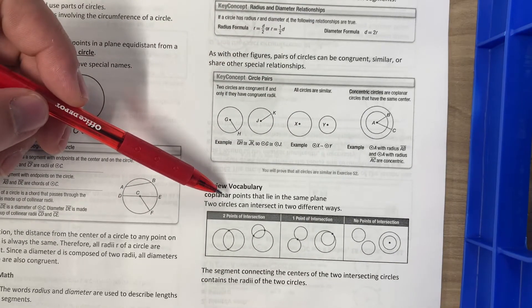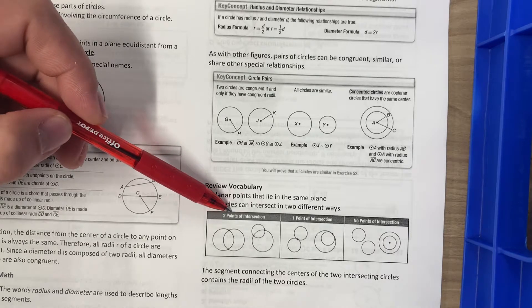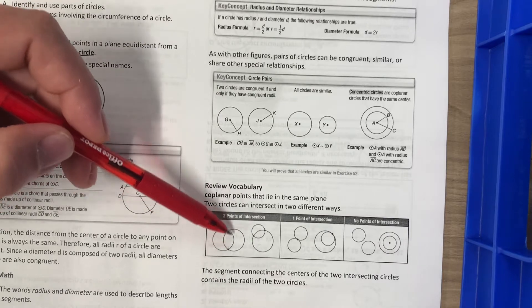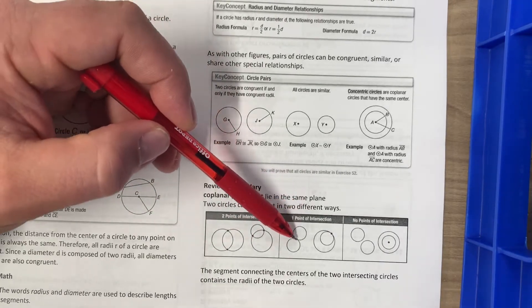Coplanar points that lie in the same plane, two circles can intersect in two different ways. Two points of intersection, like a Venn diagram crisscross right here. Or one point of intersection, right there.